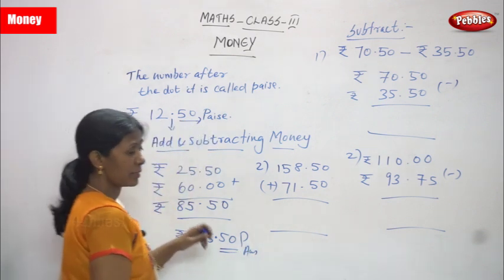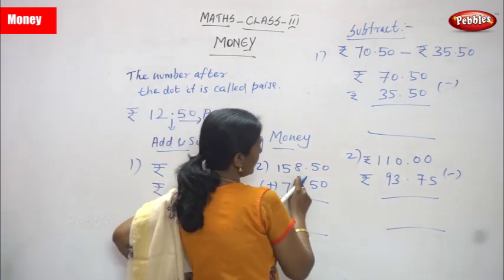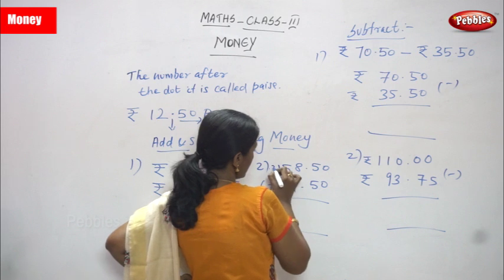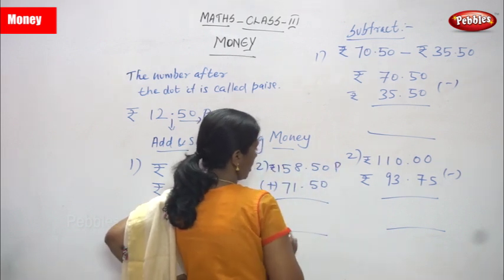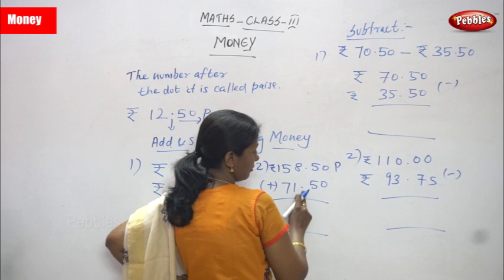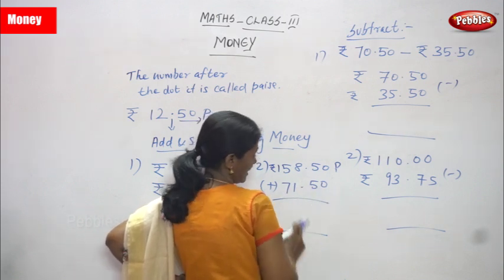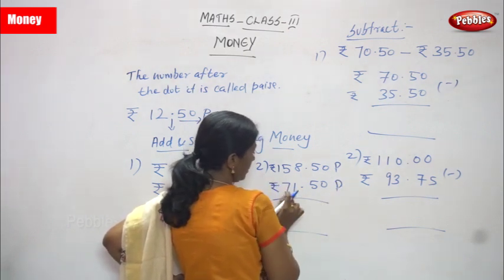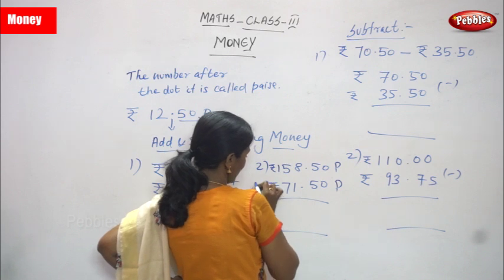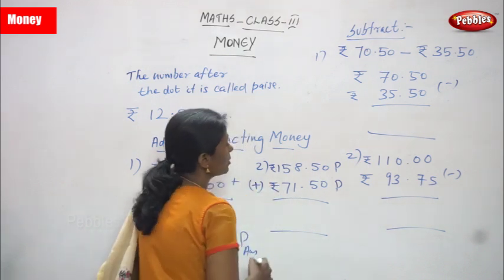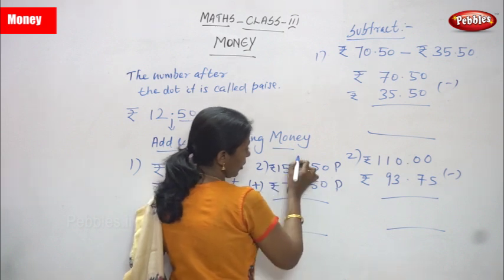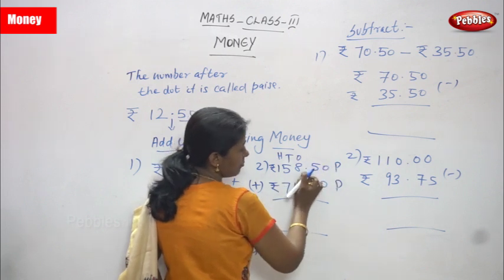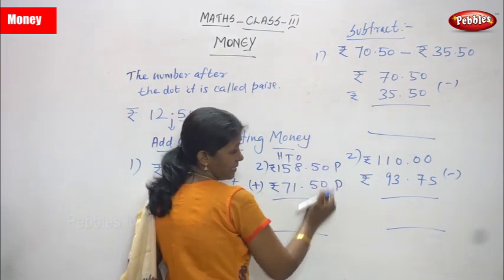Second question: 158 rupees 50 paise plus 71 rupees 50 paise. In front of each number we write the rupees symbol. Now we are going to add. You have to see the place values — ones, tens, and hundreds. After the point, we consider only the paise.